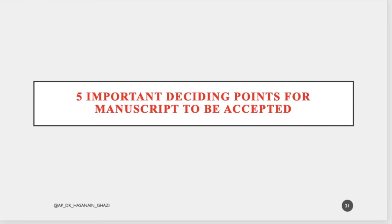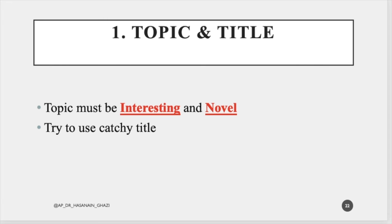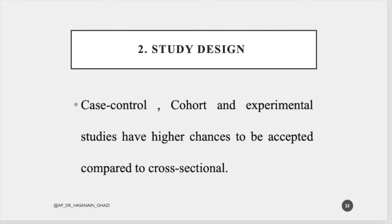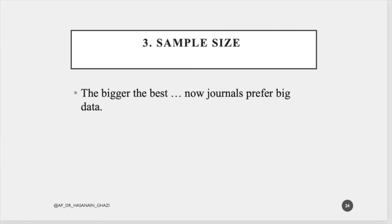What are the five important deciding points for a manuscript to be accepted? Number one is the topic and title — when you submit your paper to a journal, the editor-in-chief will look at your abstract and title first; if it is good, they will send it for peer review. The topic must be interesting and novel, and always use a catchy title. Number two is study design — case-control, cohort, or experimental designs give you a higher chance than cross-sectional studies, which journals are less interested in nowadays.